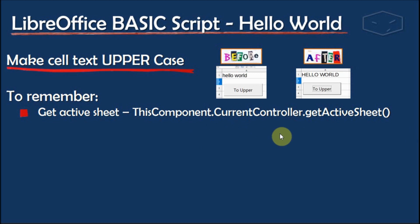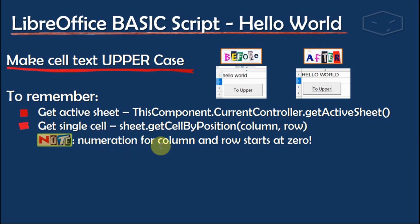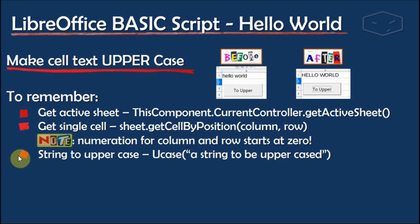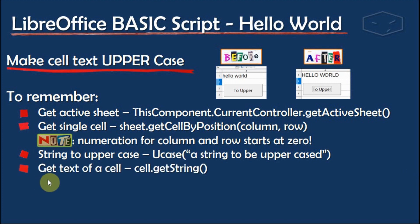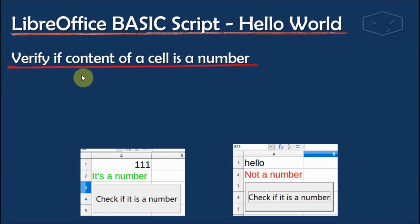Now clicking the button makes the text uppercase. To recap: to get the active sheet call ThisComponent.CurrentController.getActiveSheet(). To get a single cell, call getCellByPosition with the column and row number. Column and row numeration starts at zero. To convert a string to uppercase, call UCase() and provide a string. To get cell text, call getString(); to set cell text, call setString() with the new text.